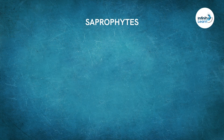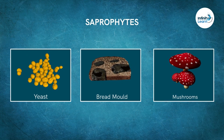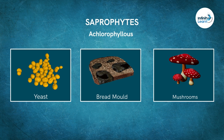Almost all fungi including yeast, mouldy bread, and mushrooms are included in this category. These organisms in their true sense are achlorophyllous, which literally means organisms that do not possess chlorophyll pigment in them.